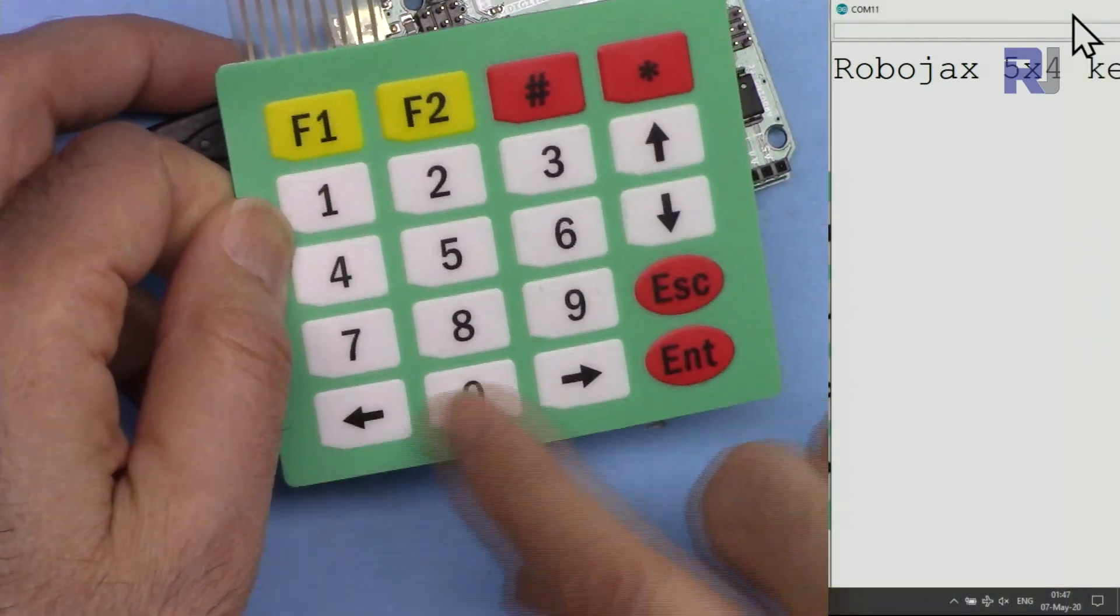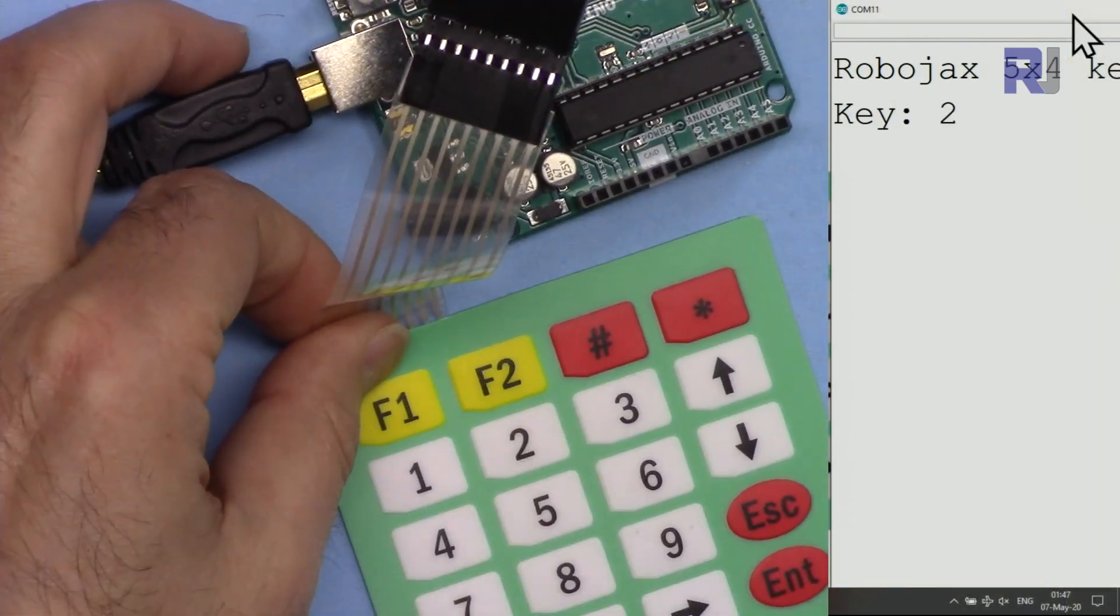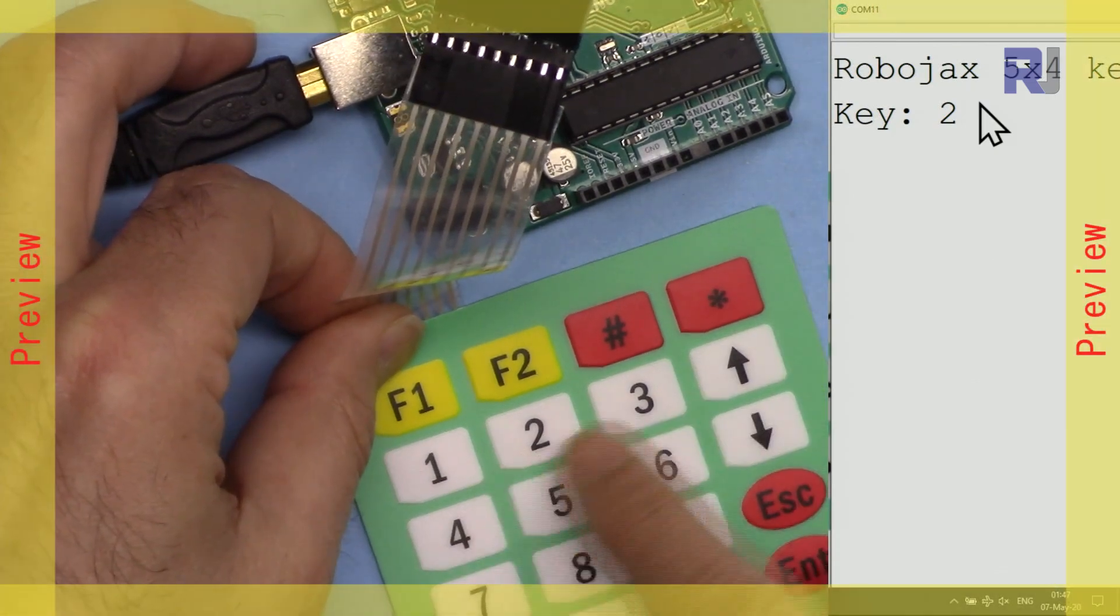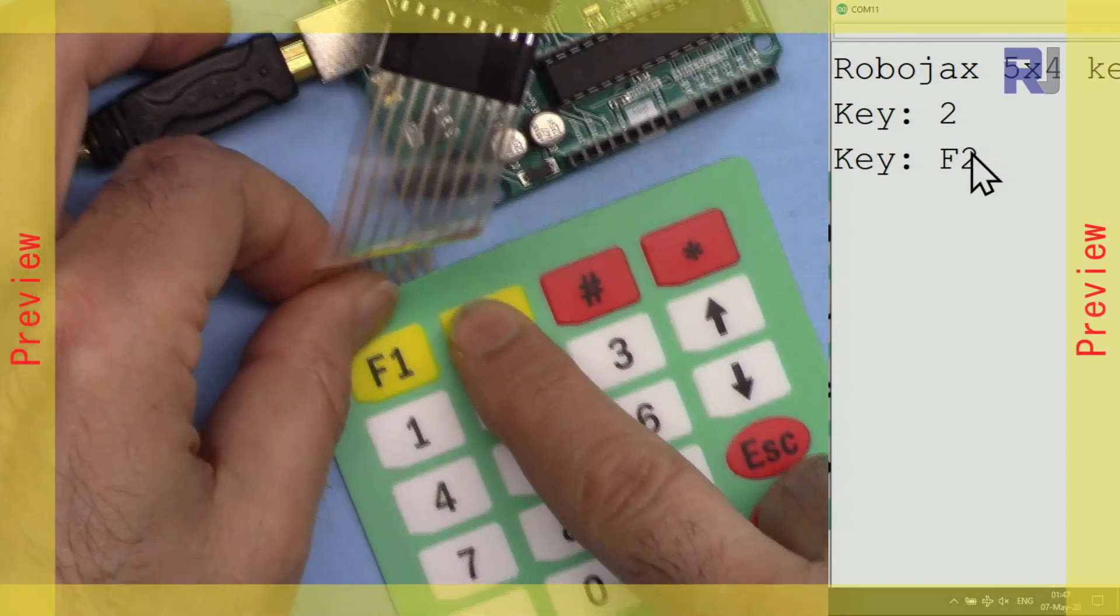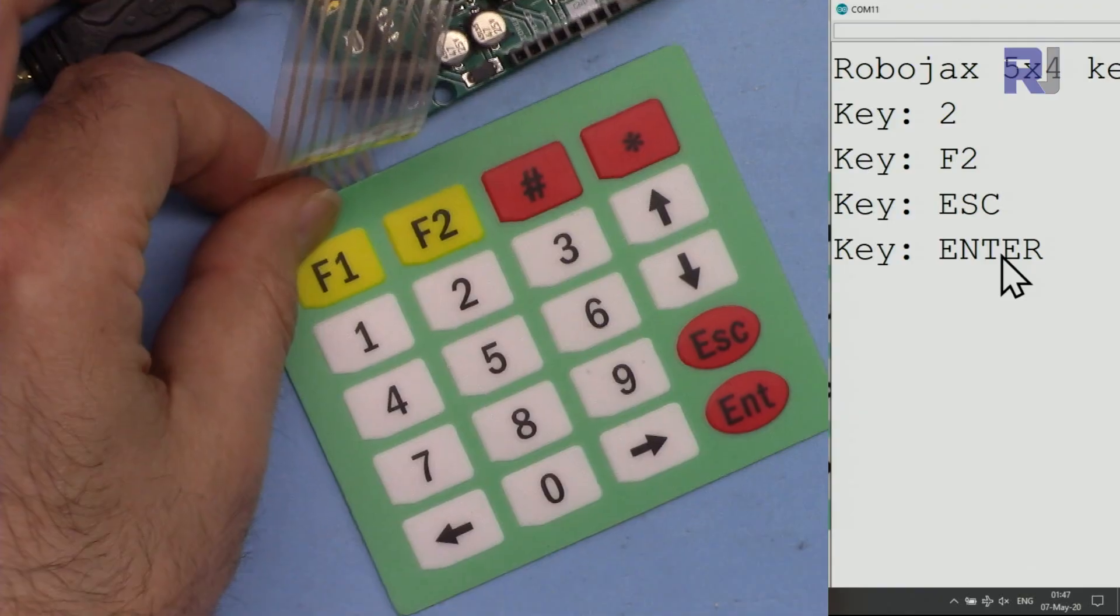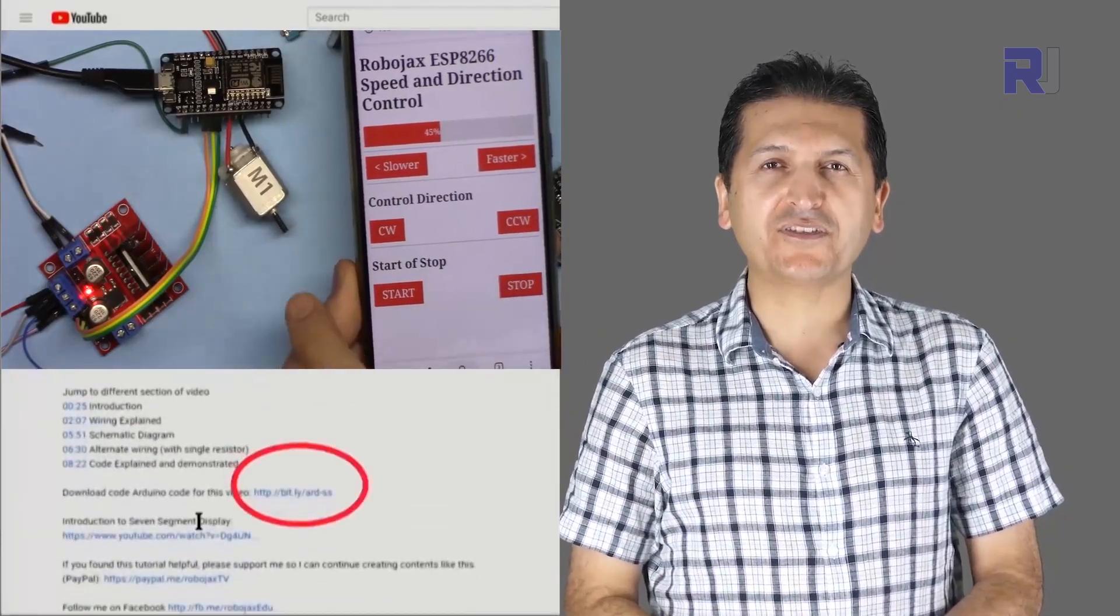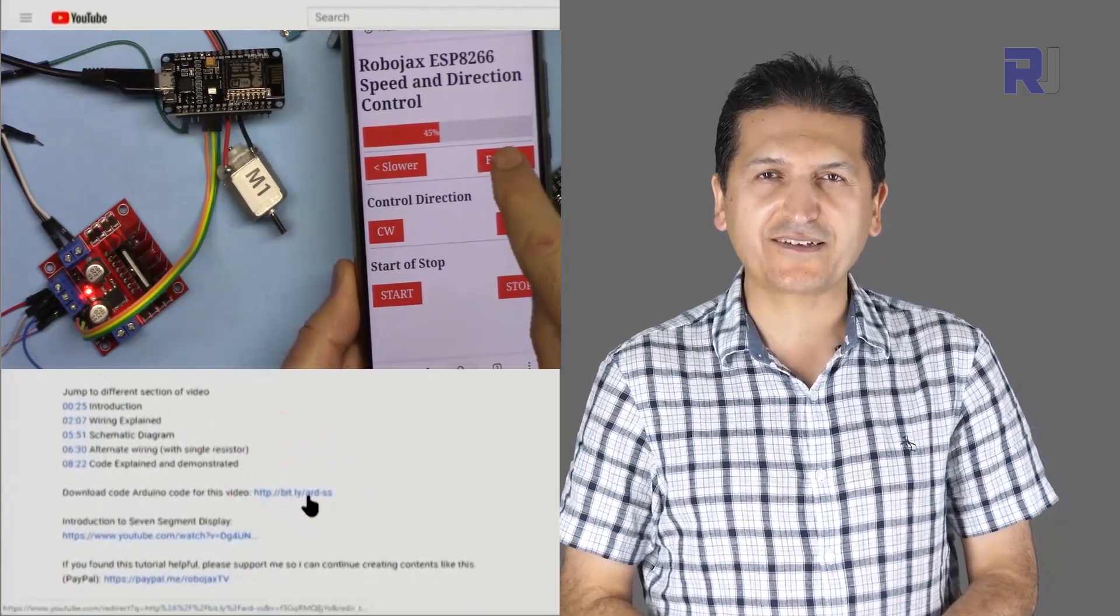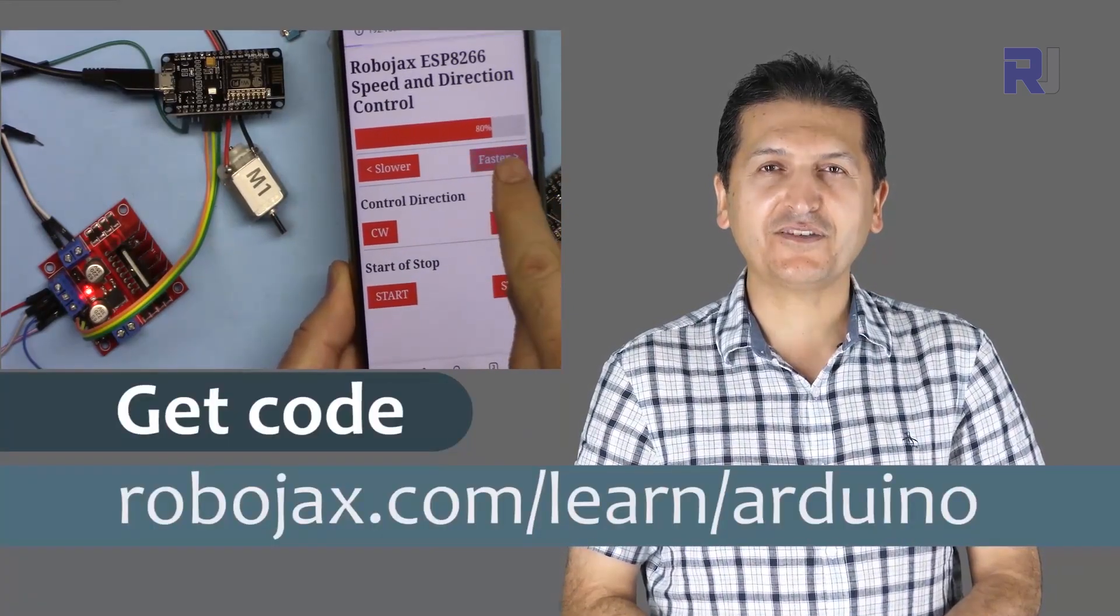So when you press it, it prints it on the serial monitor and you can use it for any other purpose you want. You see when I press that or if I press escape or press enter, it can be detected. You can get the code for this by clicking at the link below the video in the description which will take you to robojax.com/learn/Arduino. Let's get started with this.